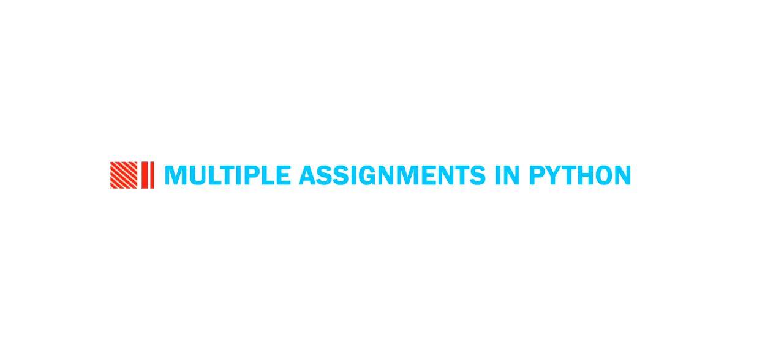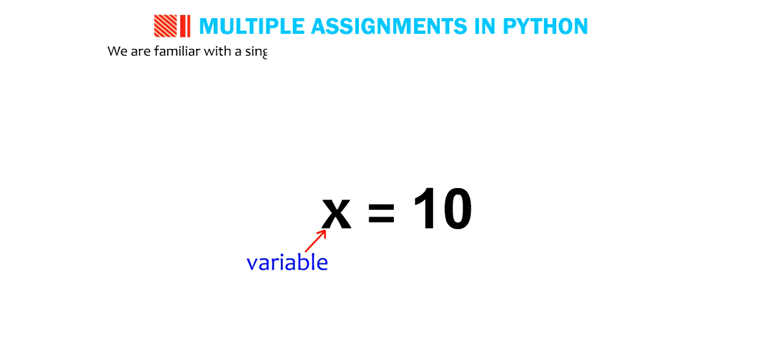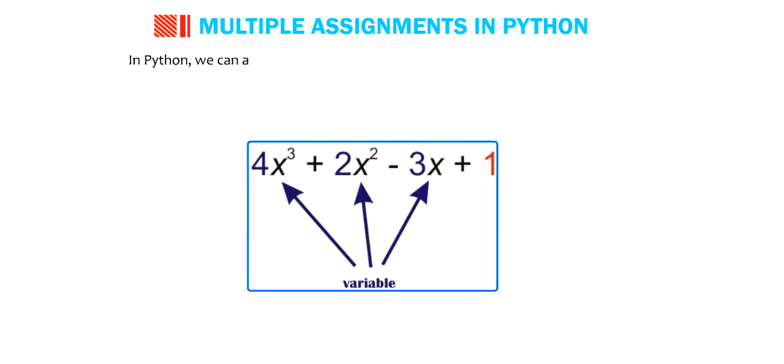Students, let us see the multiple assignments in Python. We are familiar with the single variable initialization where a single value is assigned to a single variable. In Python, we can assign a single value to multiple variables in one line of code.